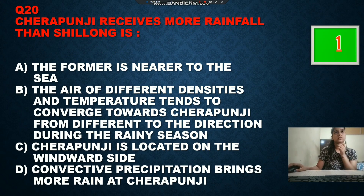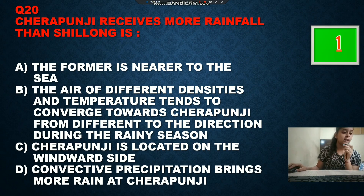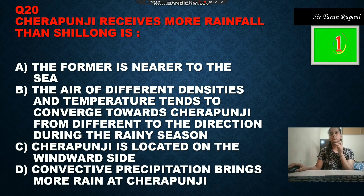Our next question: Cherrapunji receives more rainfall than Shillong because — option A is the former is nearer to the sea, option B is the air of different densities and temperatures tends to converge towards Cherrapunji from different directions during the rainy season, option C is Cherrapunji is located on the windward side, option D is convective precipitation brings more rain at Cherrapunji. The correct answer is option B.